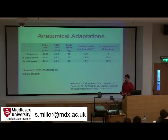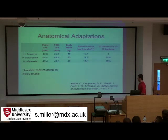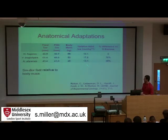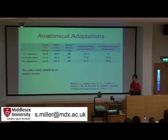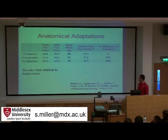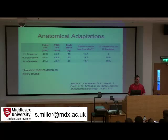A shorter Achilles moment arm might suggest we have shorter feet as well. Lieberman's group compared foot size of humans with chimpanzees and apes, finding that relative to those creatures, humans had smaller feet. The chimpanzee has a 76% larger foot relative to body size and the ape has a 38% larger foot. So those of us who are more economical also have smaller feet.